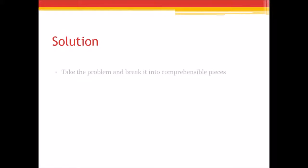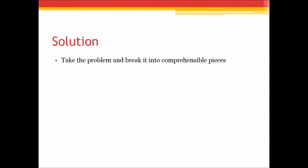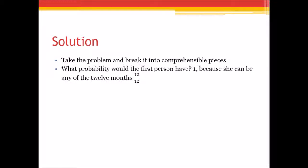Like I was saying, the first thing we want to do is take the problem and break it into comprehensible pieces. The first thing is we want to know what's the probability that the first person would have. Think of birth month, right? There's 12 months, so person one can have any month. They could be January through December and anywhere in between. So it could be 12 out of 12.